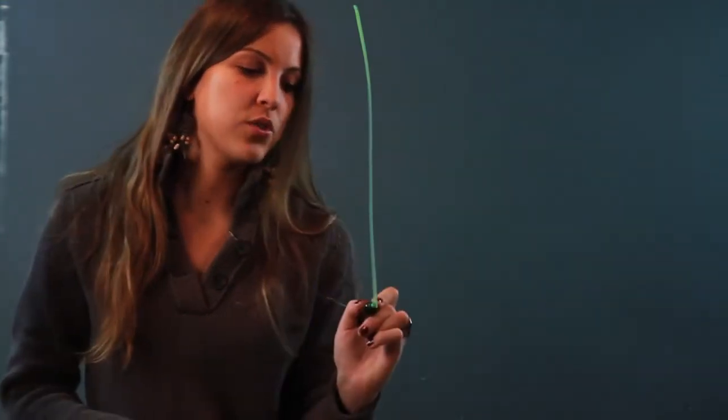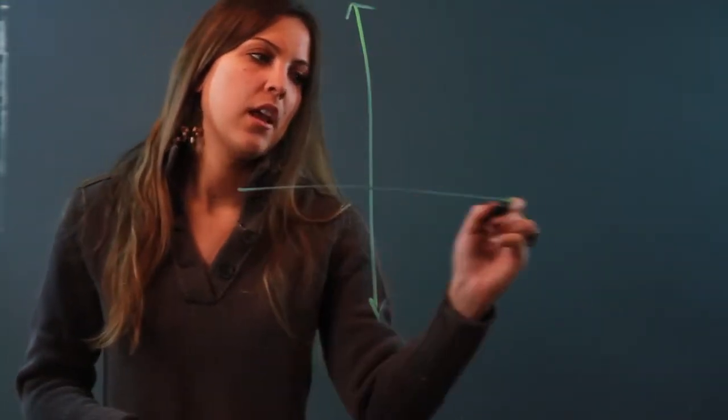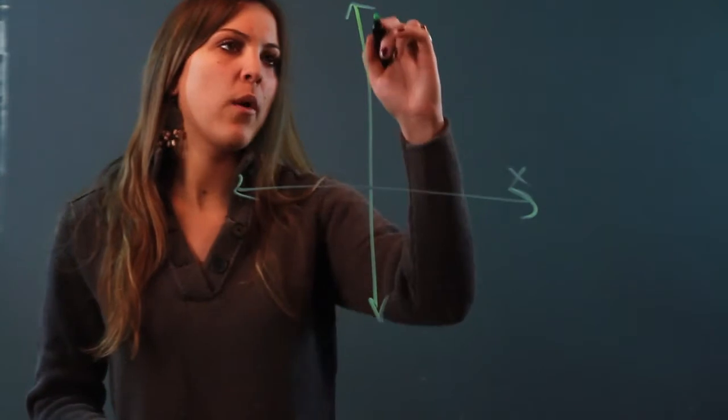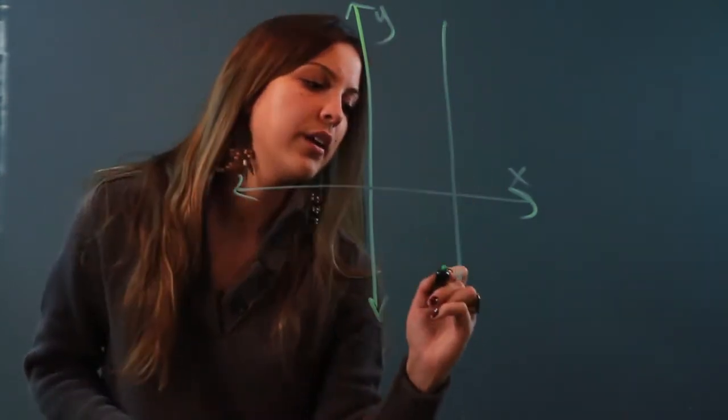Vertical lines never have a slope of zero actually. If we draw a vertical line, so here's my x-axis, my y-axis, I'll just draw a vertical line right here.